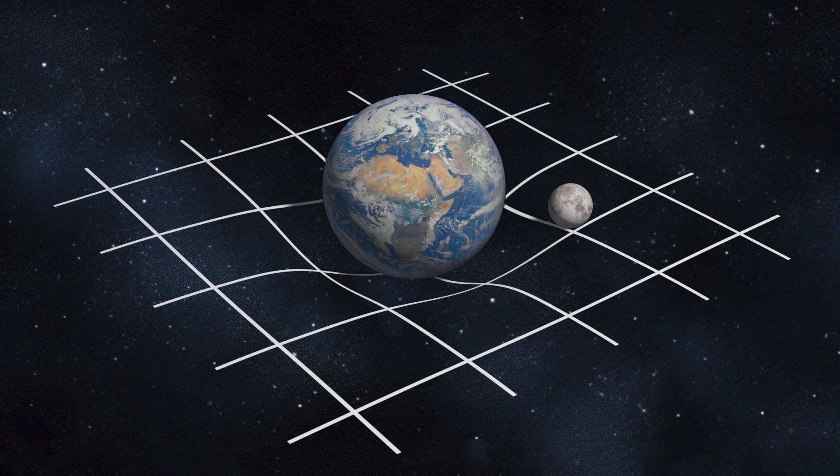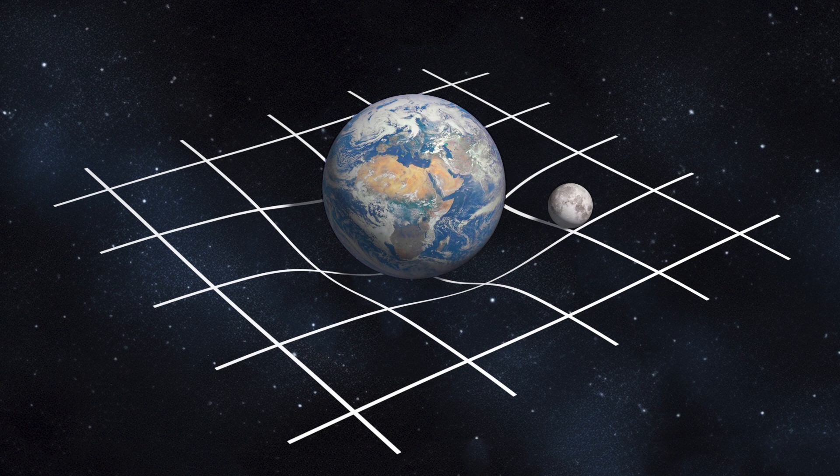Einstein also described the warping of space-time as an infinite fabric like an outstretched blanket, which is now commonly referred to as the fabric of space-time. This invisible fabric of space may have properties that can be measured, but first the properties must be defined and explained.